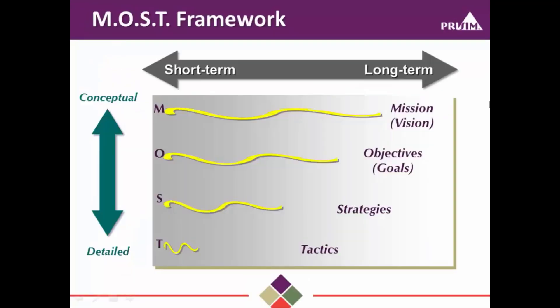Here's a simple framework called MOST that can help you define the to-be state of your company. MOST stands for mission, objectives, strategies, and tactics. Missions are longer term — they talk about the core purpose, core values, and the reason for existence of the company — whereas tactics are shorter term. Objectives, the O in MOST, support the mission and define metrics that can be achieved along the way. Strategies, the S in MOST, are how you accomplish the objectives. And tactics are the day-to-day activities that bring those strategies to life.